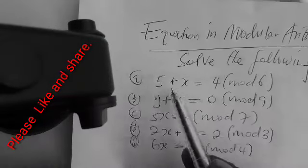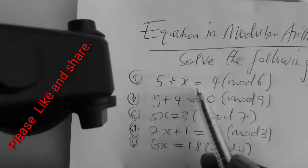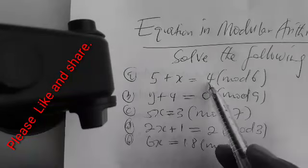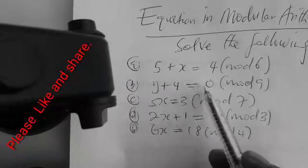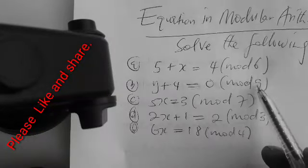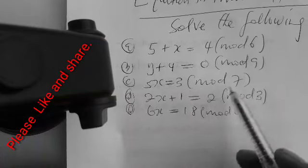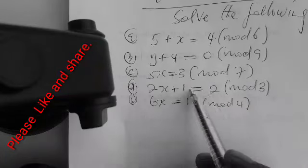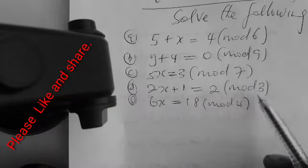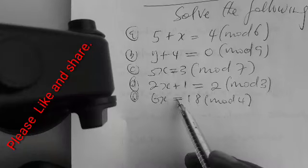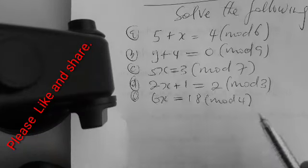As you can see, we have five equations: 5 plus x equals 4 mod 6; y plus 4 equals 0 mod 9; 5x equals 3 mod 7; 2x plus 1 equals 2 mod 3; and 6x equals 18 mod 4.